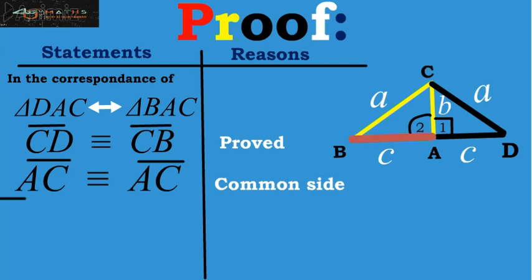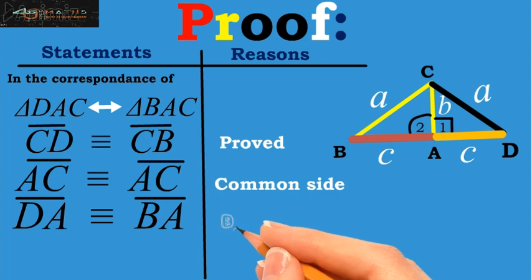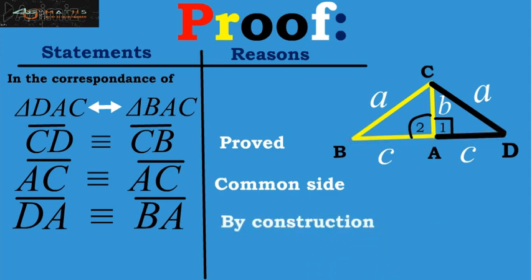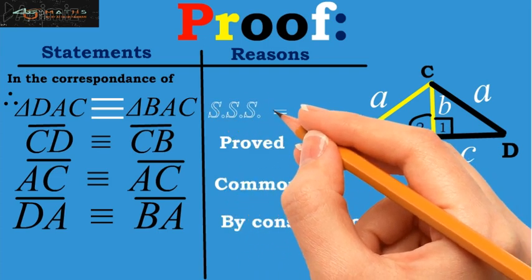Also, DA is congruent to BA. Why? Because by construction. So we conclude that the triangle DAC is congruent to triangle BAC. The reason for this is by using SSS postulate.